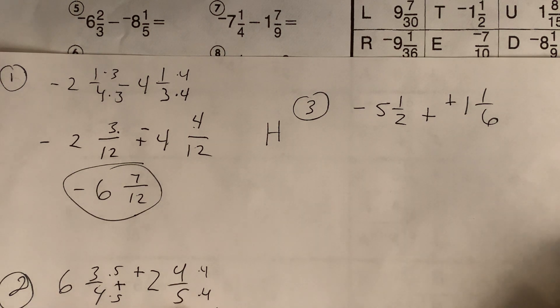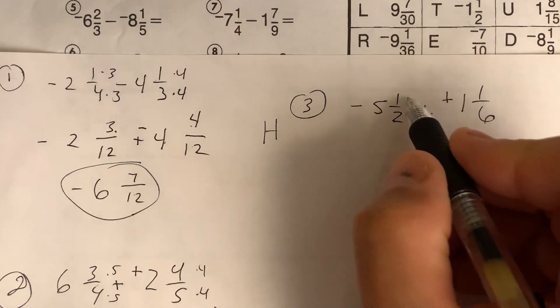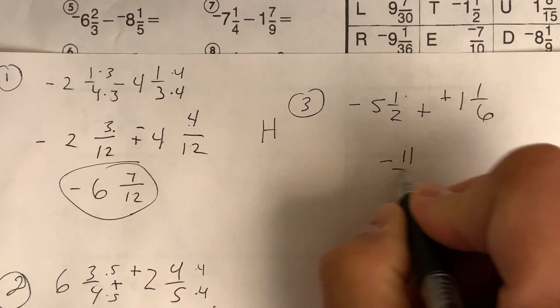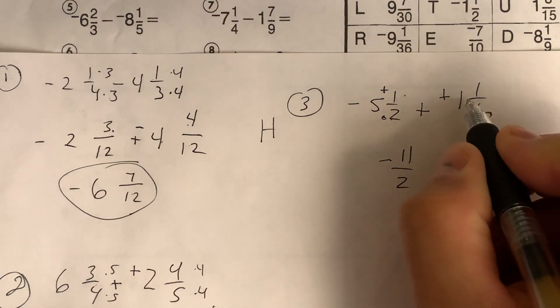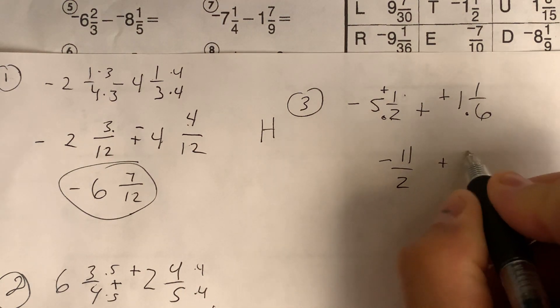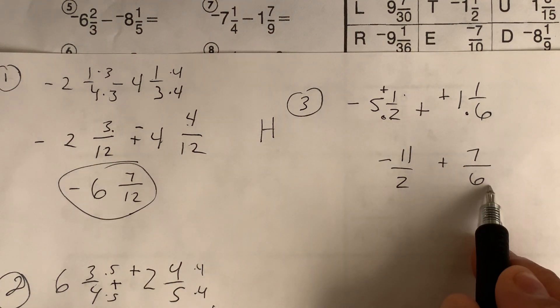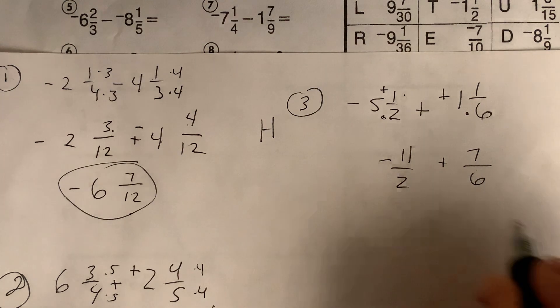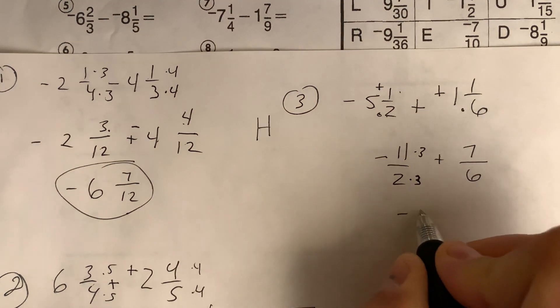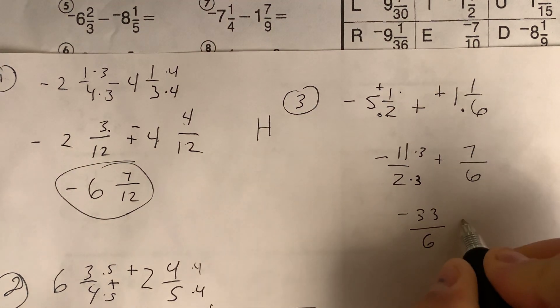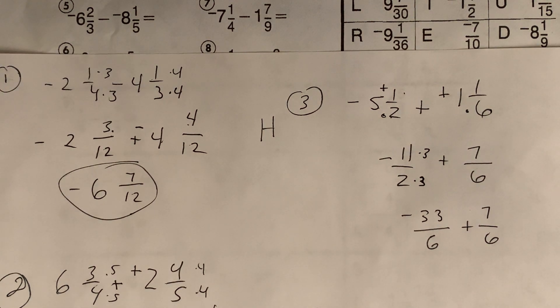So it might be easier in this case for these to be improper. You don't have to, but some people like to do that. Let's make them improper. Most people choose to do it that way. So five times two is 10 plus one is 11. So it's negative 11 halves. We're making them improper. Then six times one is six plus one is seven sixths. Now we need a common denominator. I'm going to probably go with six because two does go into six, but you can use 12. You just have to reduce it when you're done. So times three and times three. So we get negative 33 over six plus seven over six.